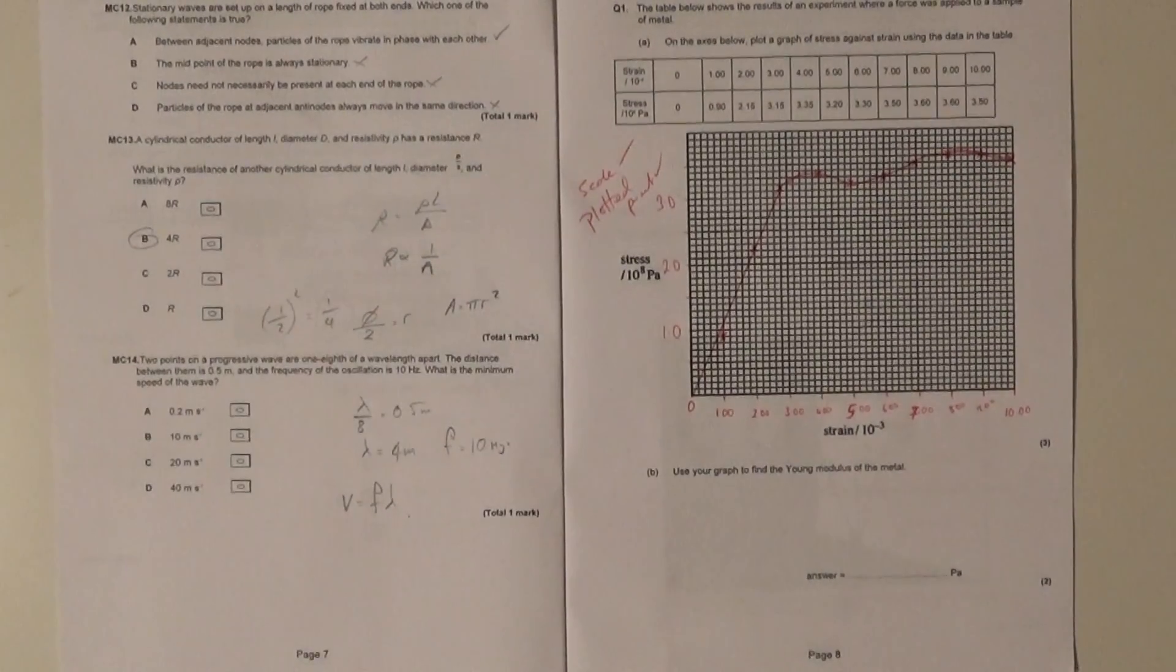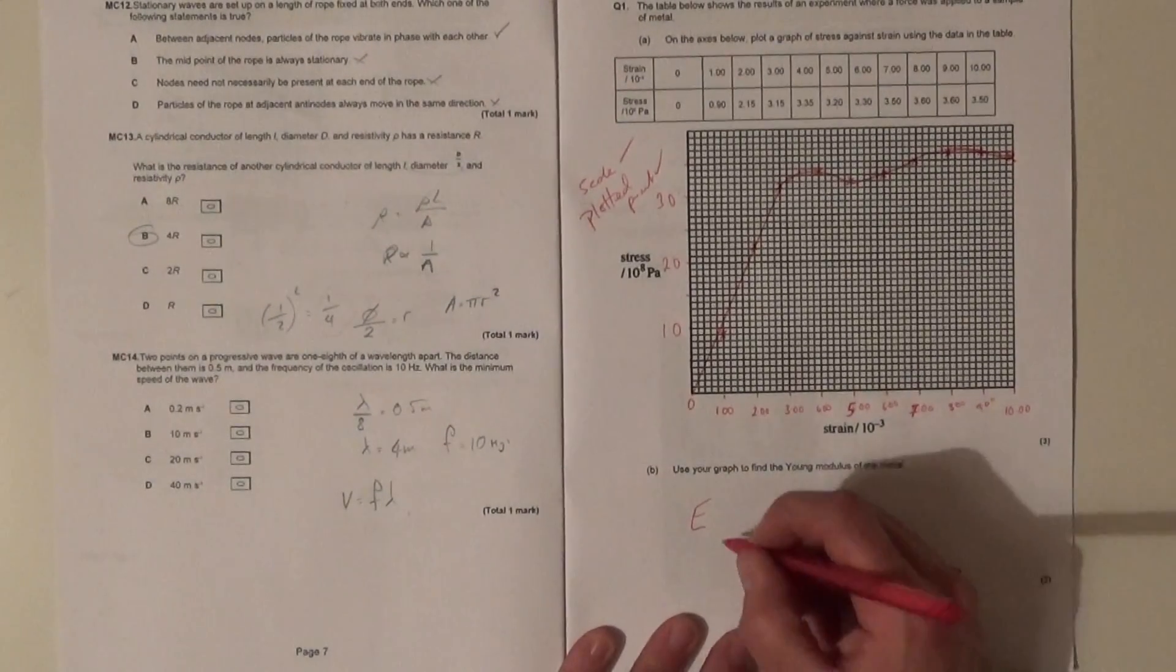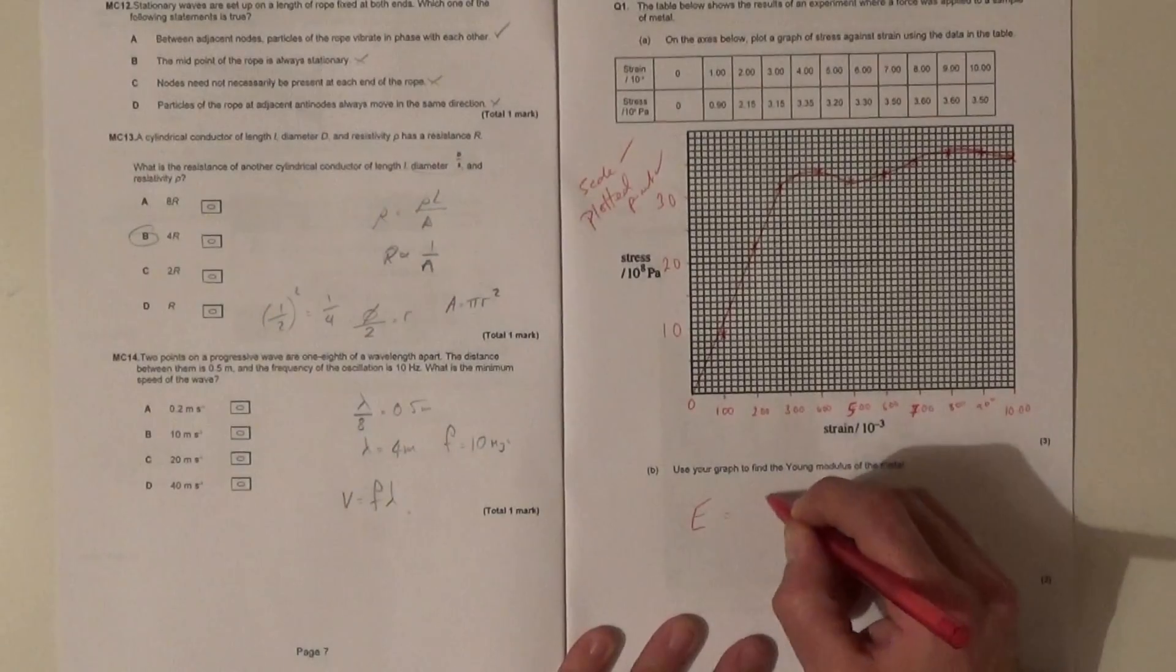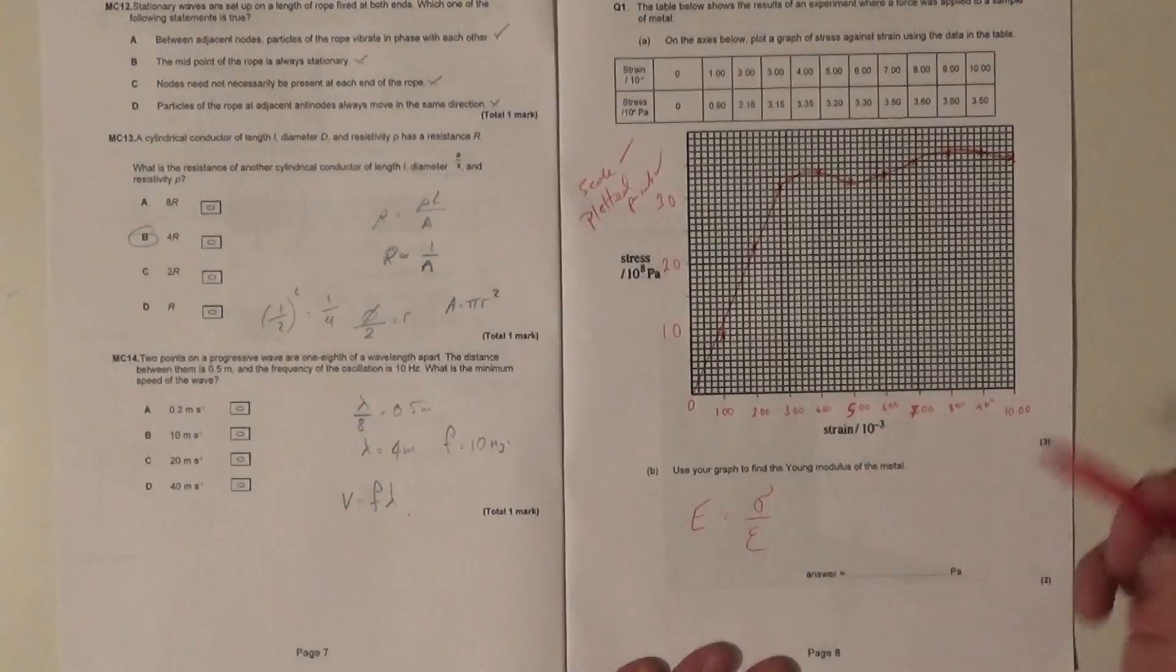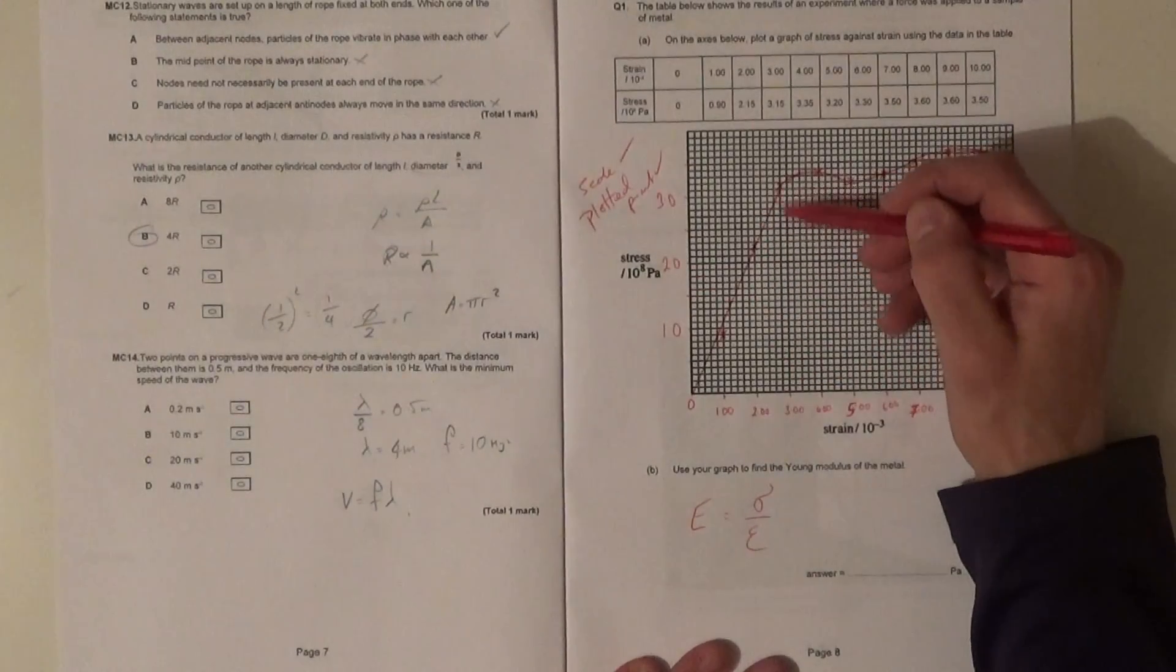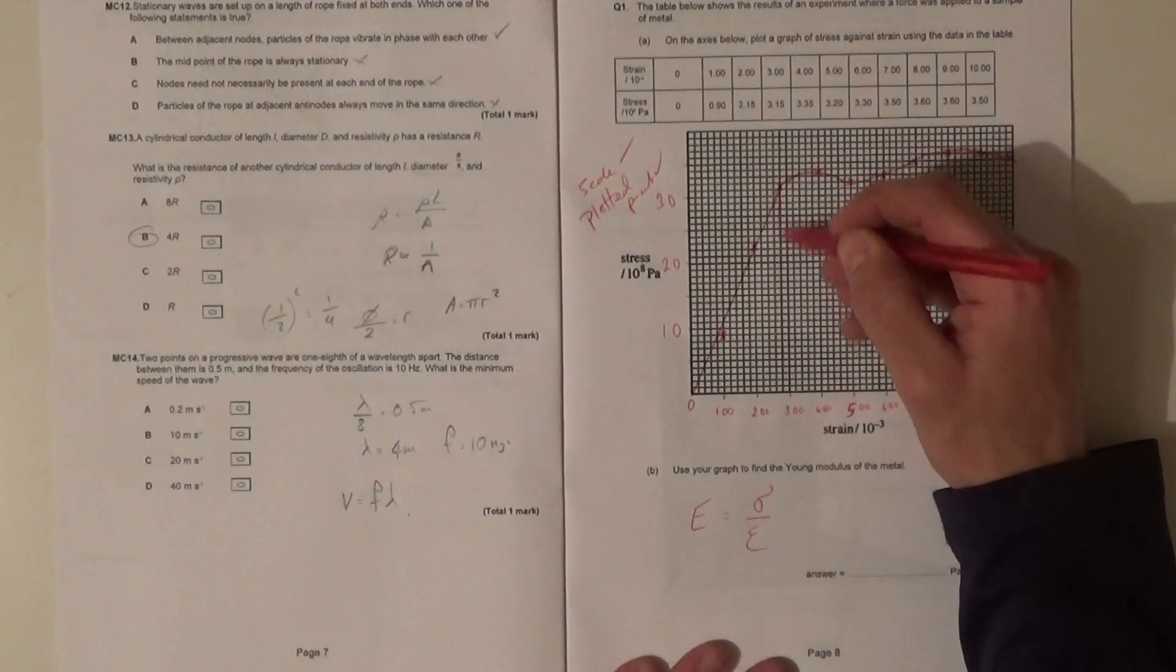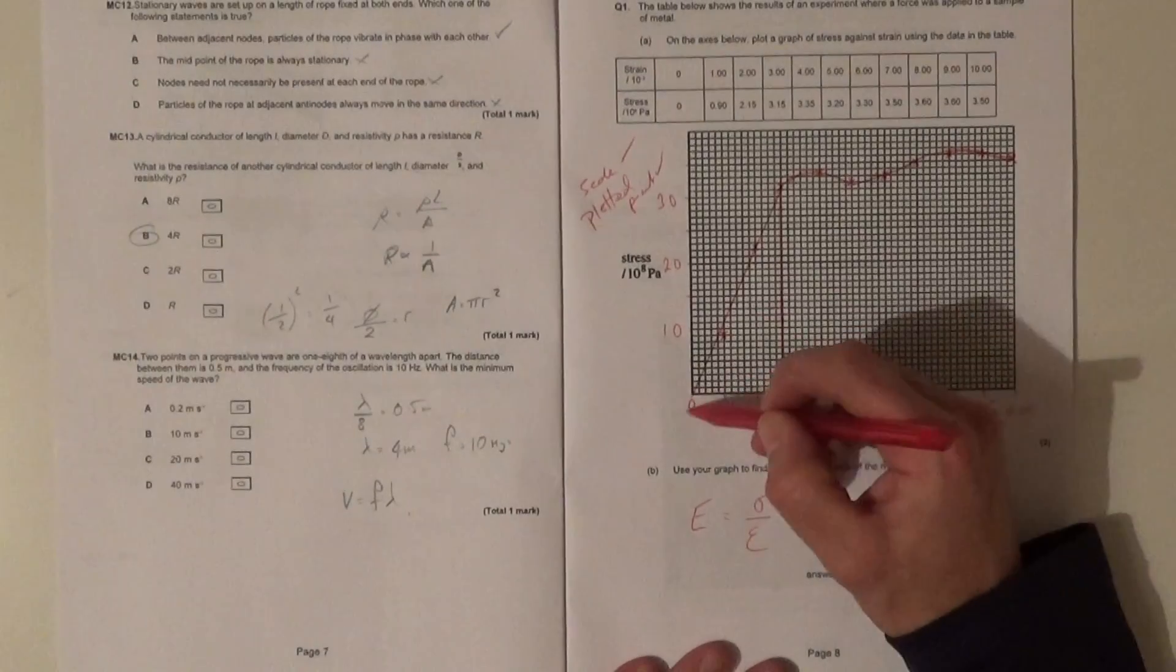After that you're going to find the Young's modulus of the wire of metal. Obviously as you know, the Young's modulus is stress over strain, and so it is basically the gradient of a stress-strain curve. So what you want to do is take a nice big gradient triangle.